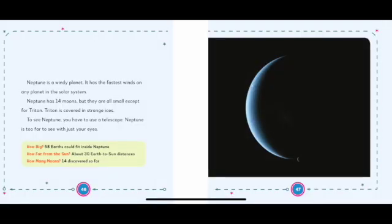Neptune is a windy planet. It has the fastest winds on any planet in the solar system. Neptune has fourteen moons, but they are all small except for Triton. Triton is covered in strange ices. To see Neptune, you have to use a telescope. Neptune is too far to see with just your eyes.